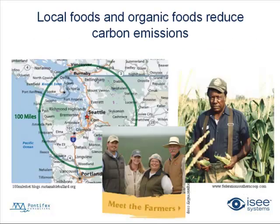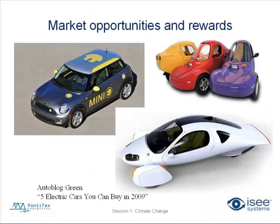Other things you can do include eating locally and organic foods. The average American's food travels approximately 1,200 miles to get to them — that's a lot of energy and transportation costs. Eating locally can really cut down transportation emissions associated with food production. There are also many electric cars you can buy right now — some of them almost look like they could be made by Apple — and all kinds of vehicles that we could start getting into right now.